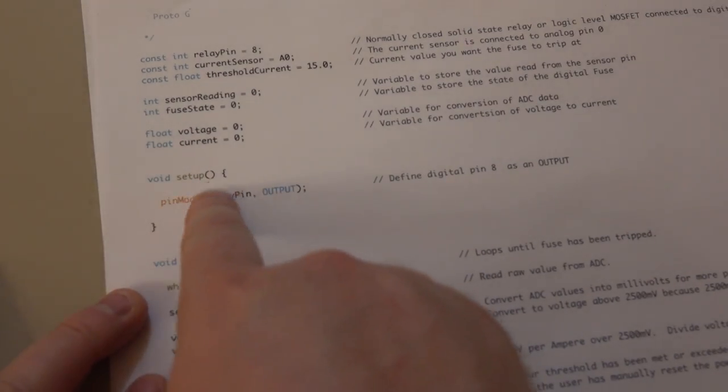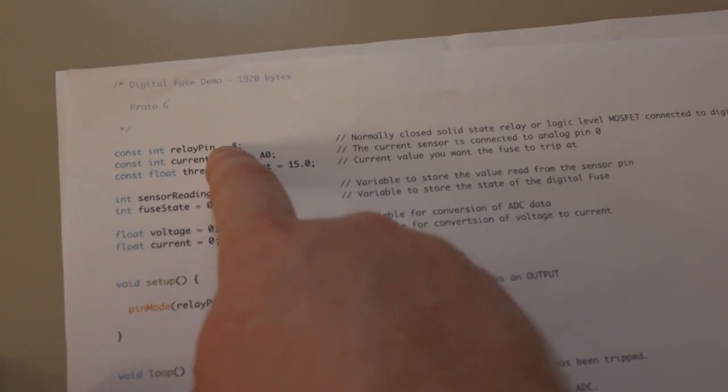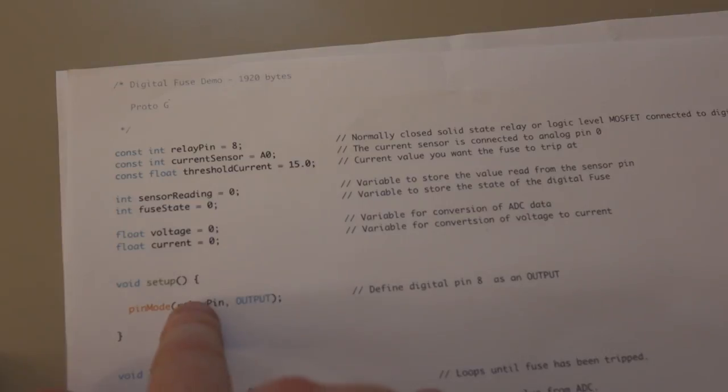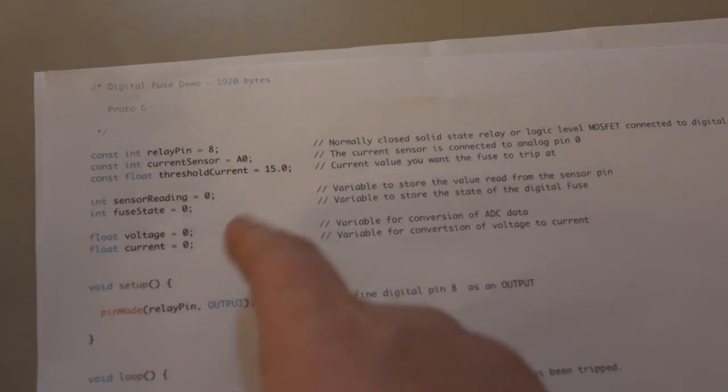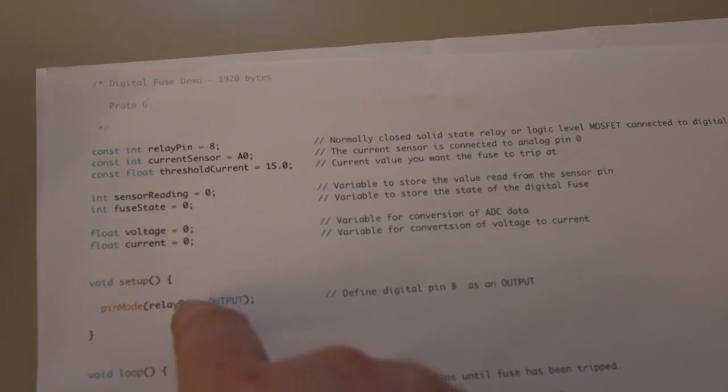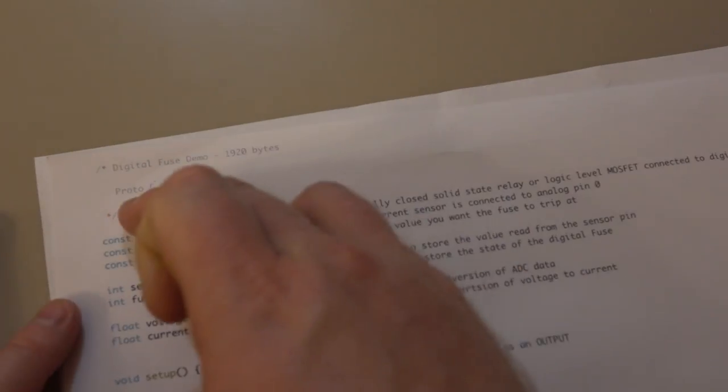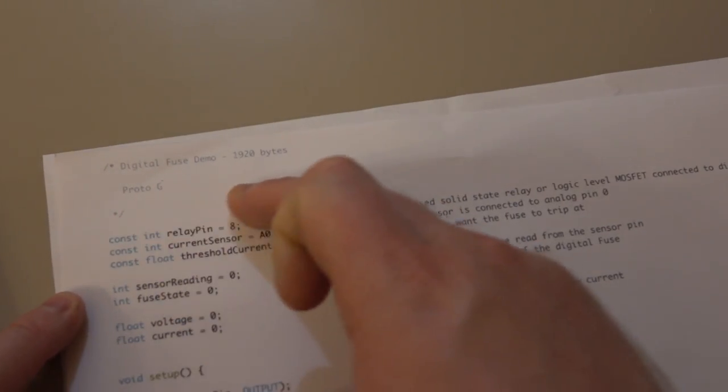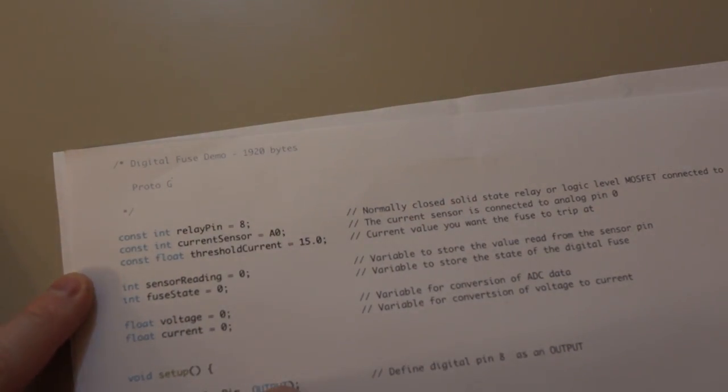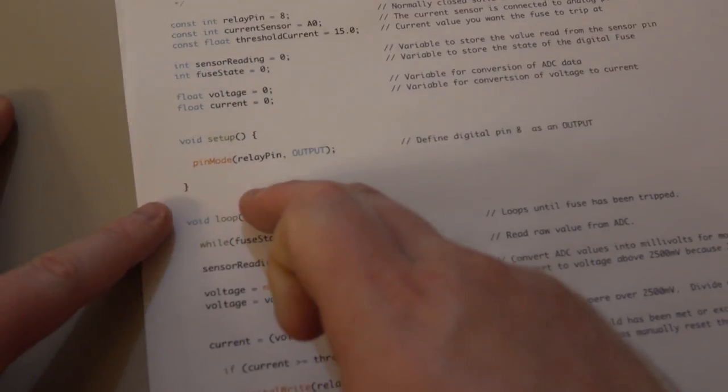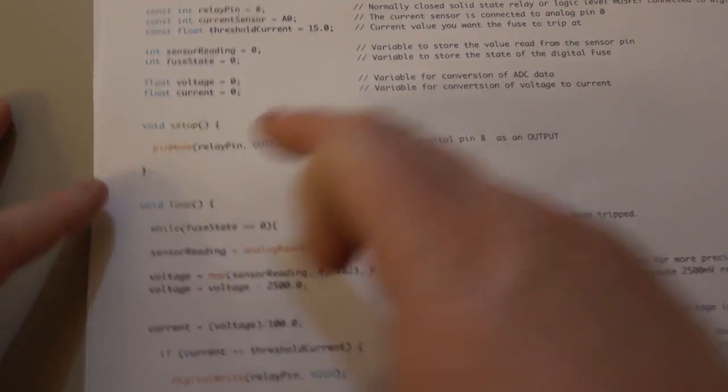Next we have the setup, and we're just basically telling the microcontroller that digital pin 8, relay pin equals 8, we're going to define that as an output. So 8 is just going to either be high or low depending on what we tell it to do. This part of the code is only ran once when you supply power to the microcontroller. It initializes all this, sets up the output, and then this is the entire program here.